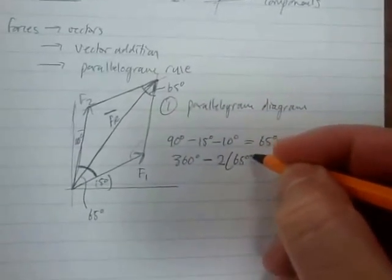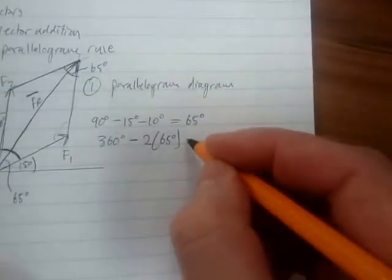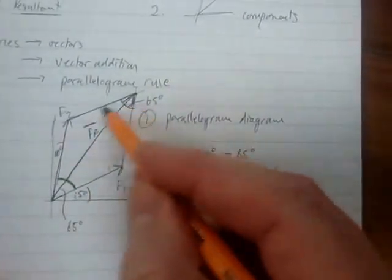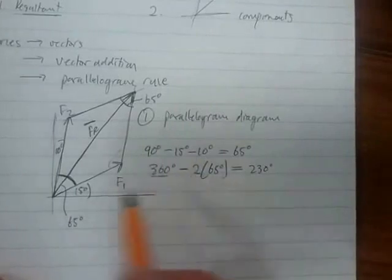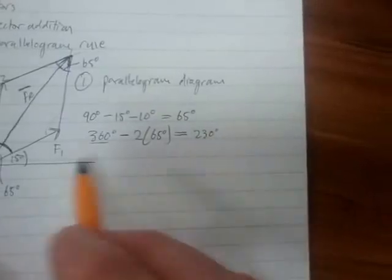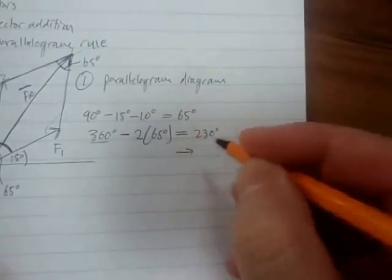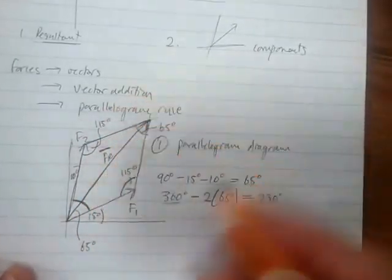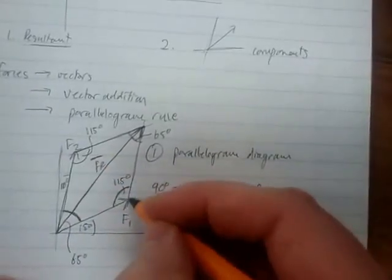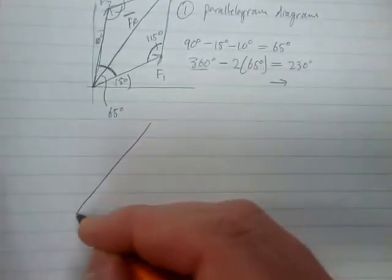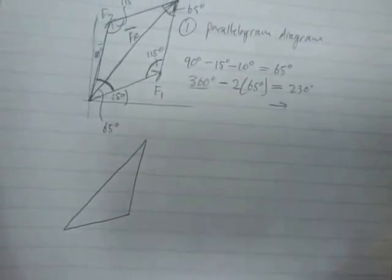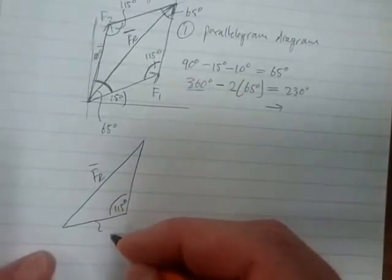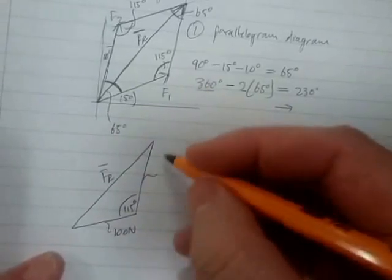So 360 degrees minus 2 times 65 degrees gives us 230 degrees, and dividing by 2 gives us the other two interior angles at 115 degrees each. Now we have a triangle where FR is the unknown side, the included angle is 115 degrees, F1 equals 100 newtons, and F2 equals 150 newtons. We can use the cosine rule to calculate the magnitude of FR.